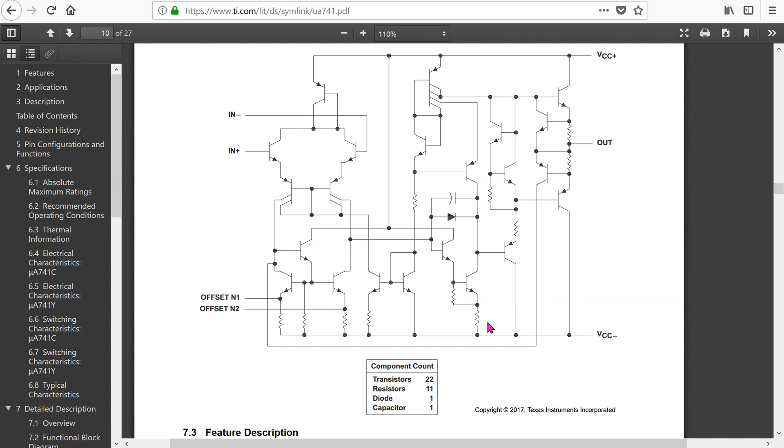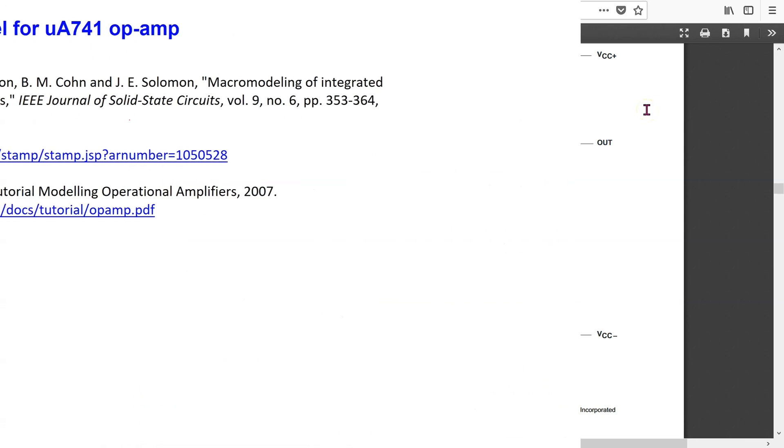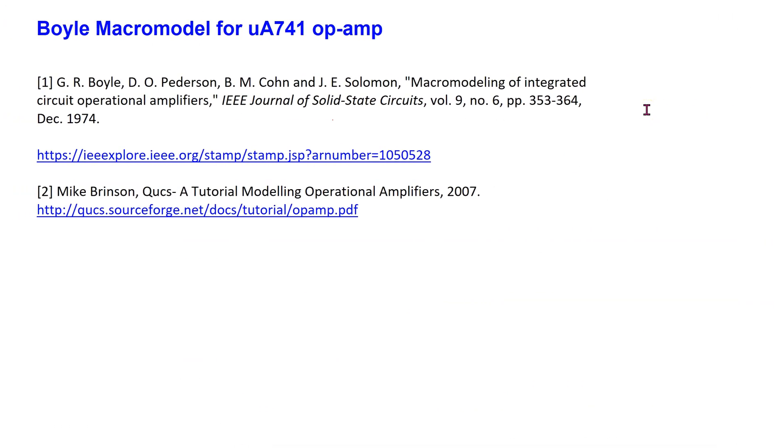Typically, circuit simulators do not attempt to simulate the complete internal circuitry of the op-amp. Instead, they use macro modeling technique to represent the important op-amp behavior from the device terminal perspective. In this regard, the seminal macro model for the 741 op-amp was originally proposed by Boyle in 1974.